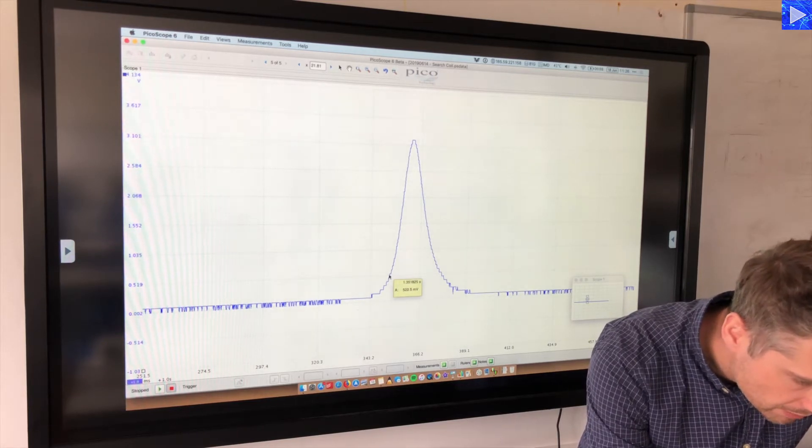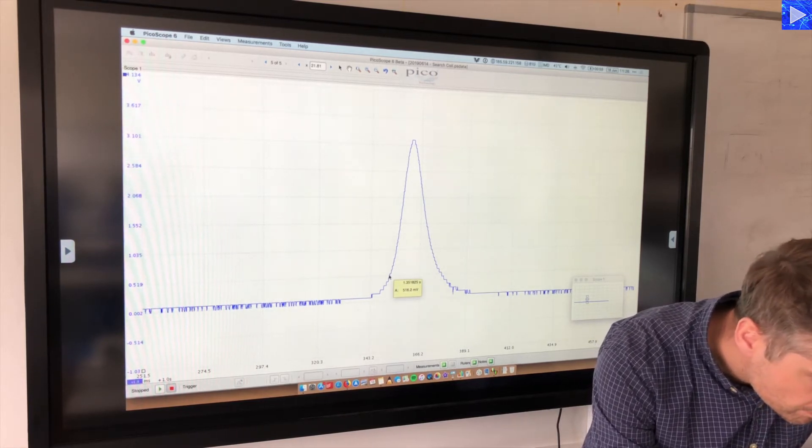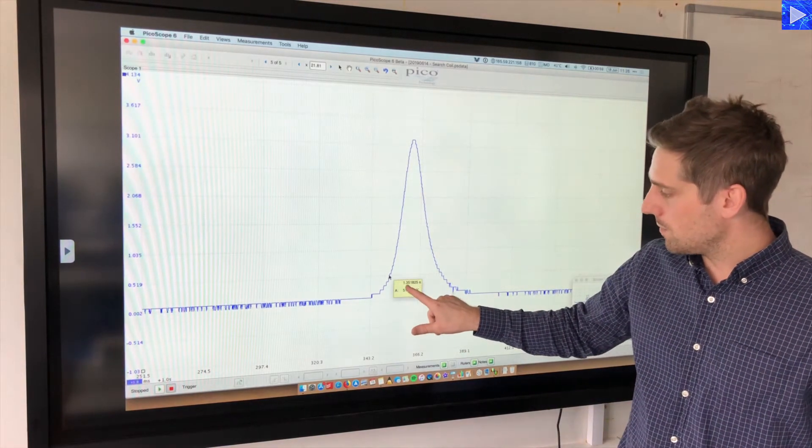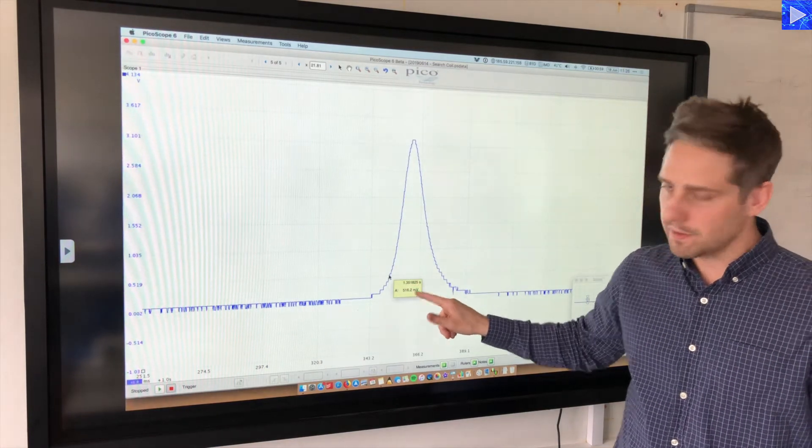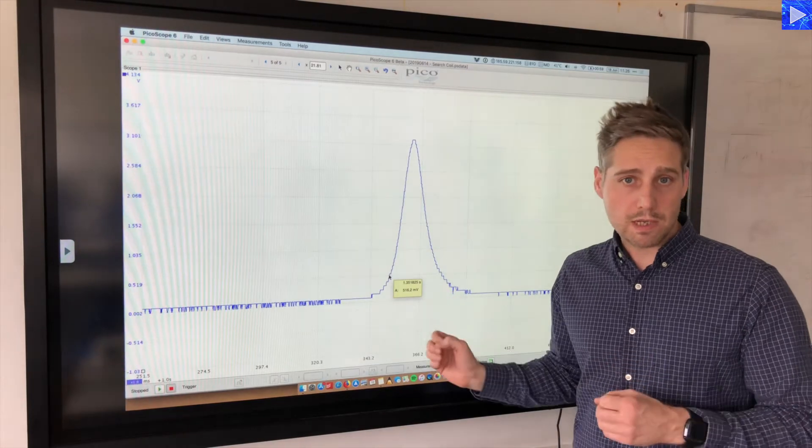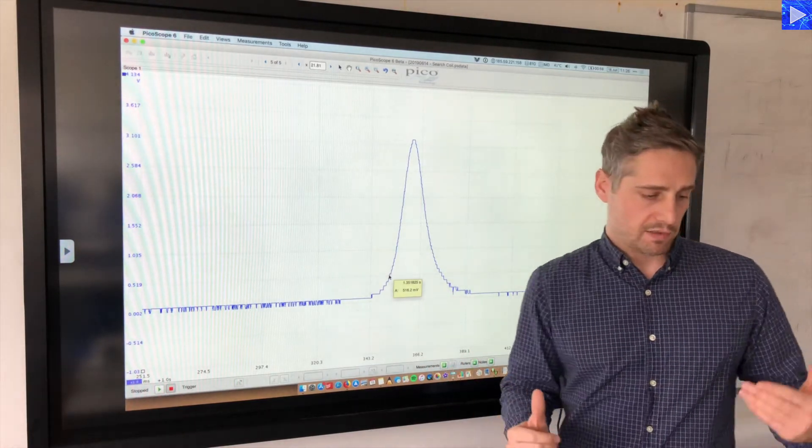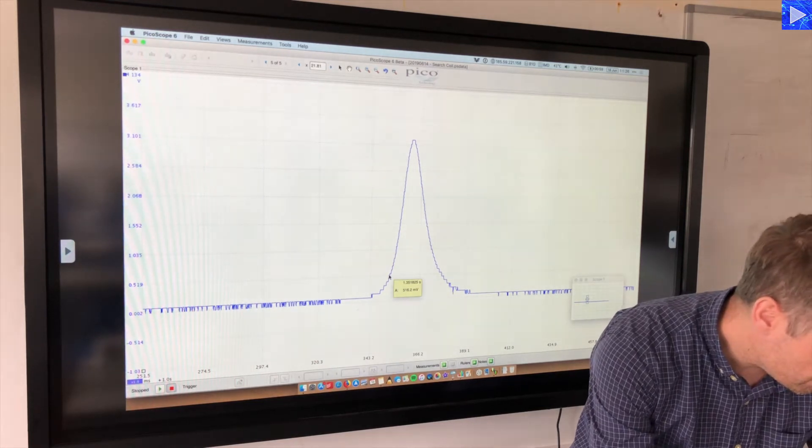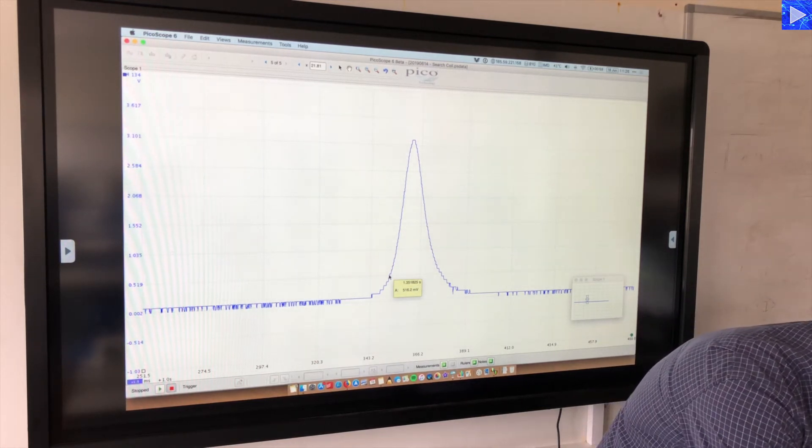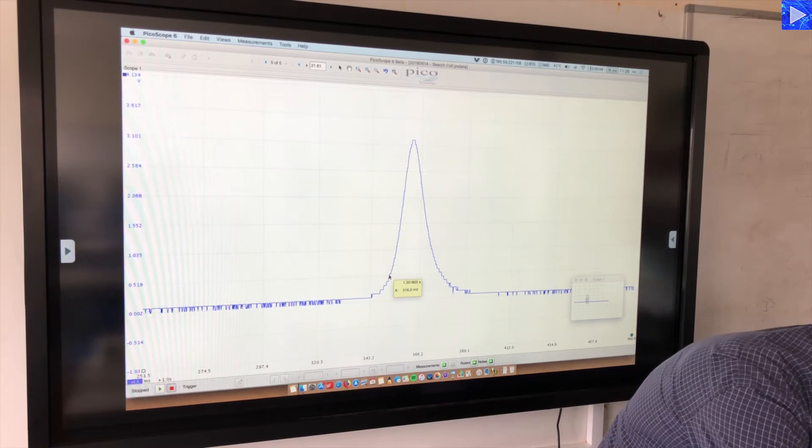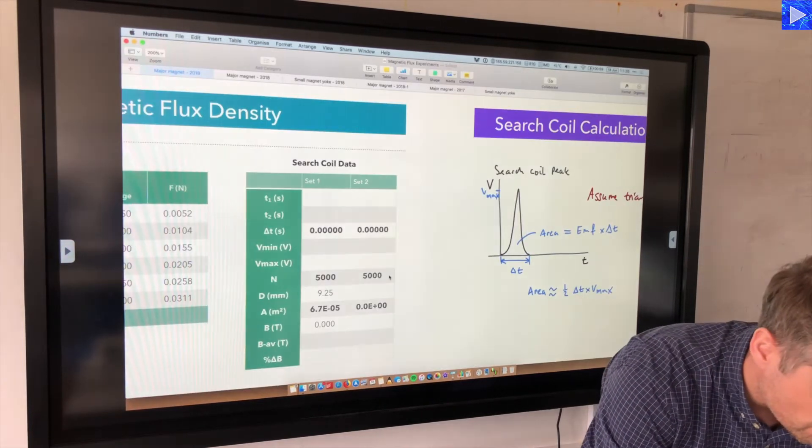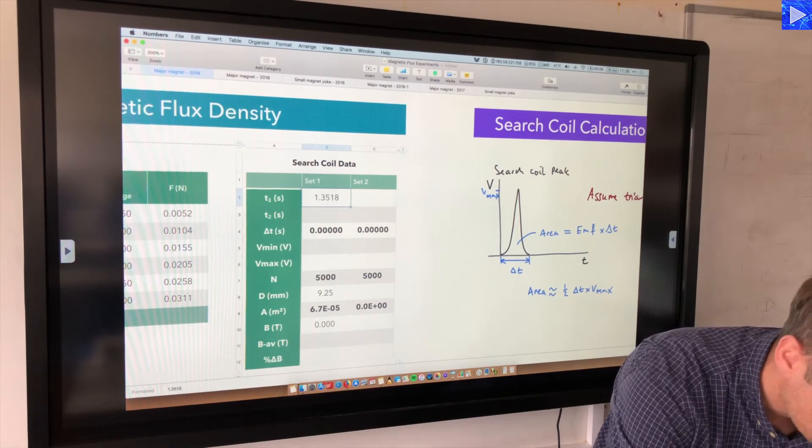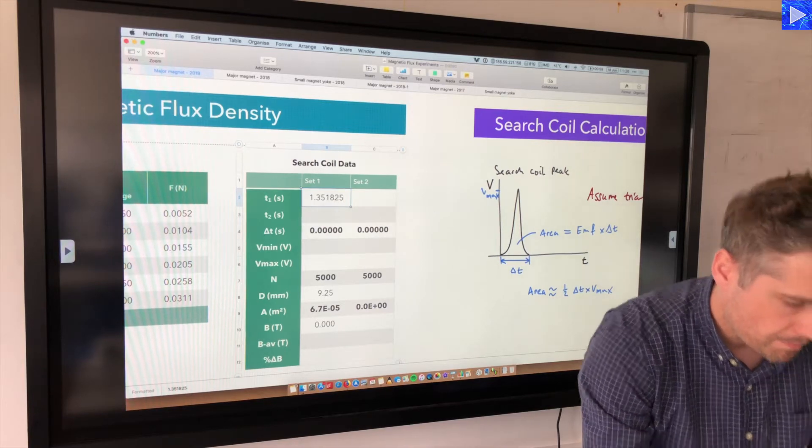Let's actually try doing that now. I'll try and click and get a value close to 0.519. Okay, so that one looks okay. This is a time of 1.351825 and 516 millivolts.